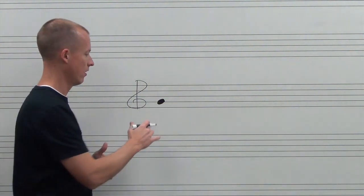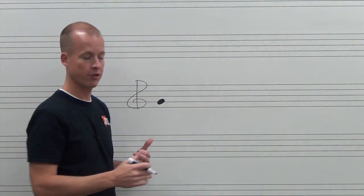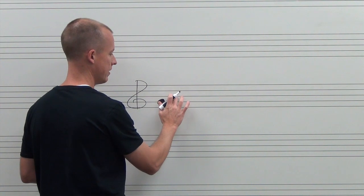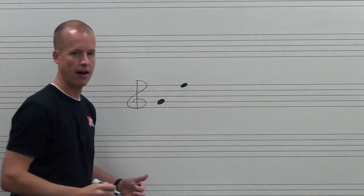From there we can go up the staff, line space, line space, according to the musical alphabet, and figure out any other pitch. So G, A, B, C, D, E, F. So this fifth line is a high F.